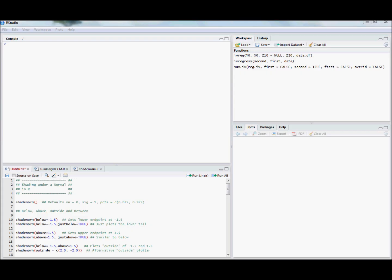In this video I demonstrate how to use a function that I wrote called ShadeNorm to shade under a normal PDF. This is a function that uses the polygon command.